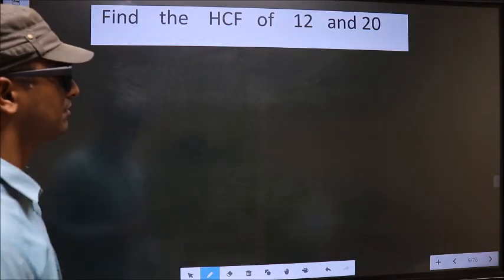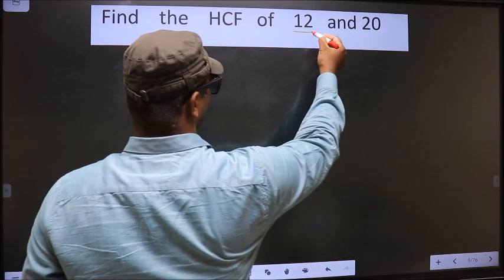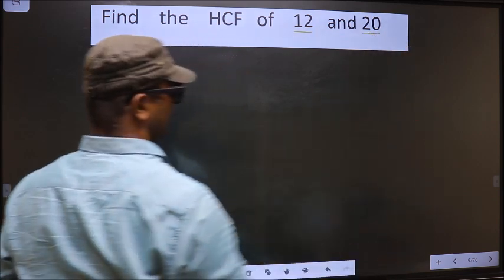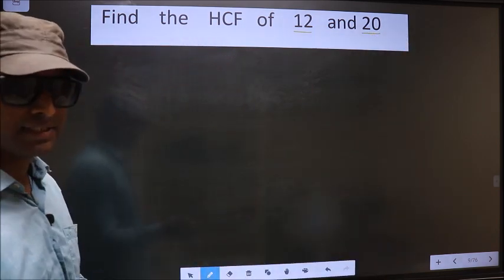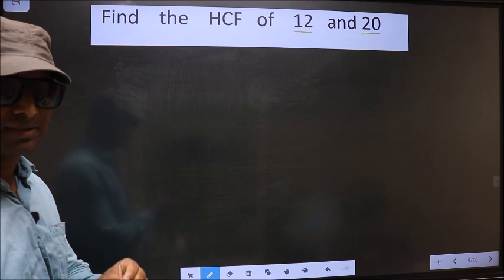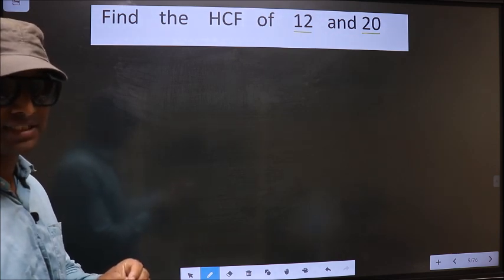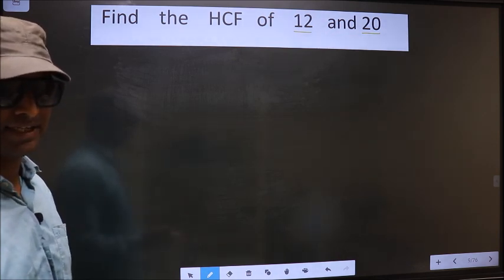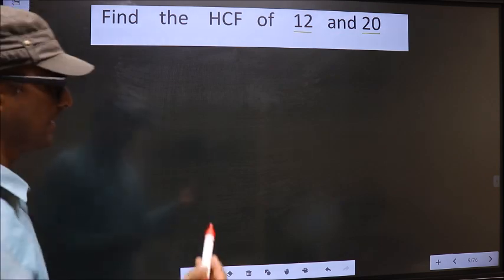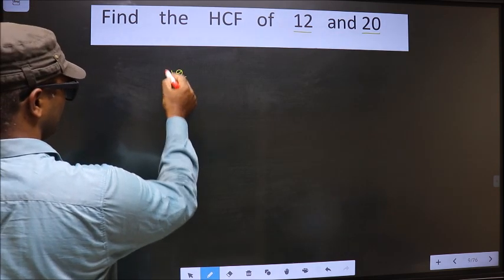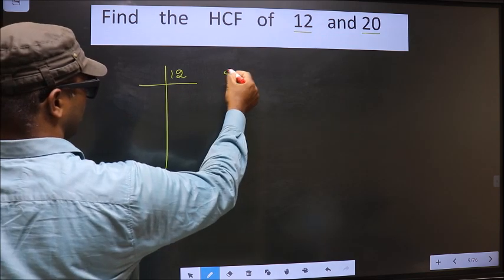Find the HCF of 12 and 20. To find the HCF, first we should do the prime factorization of each number separately. 12, 20.